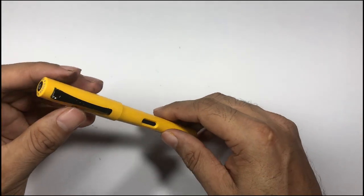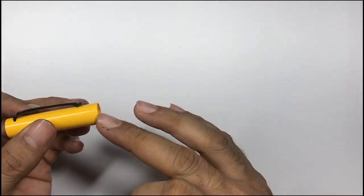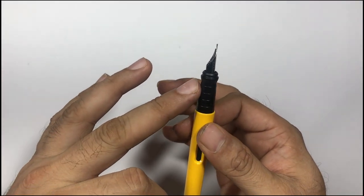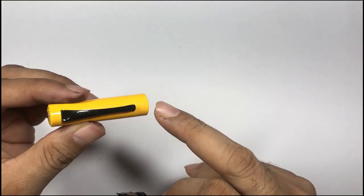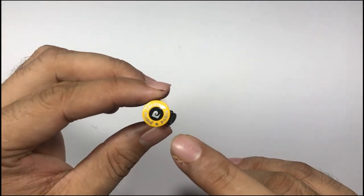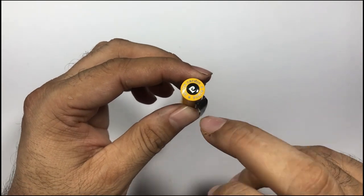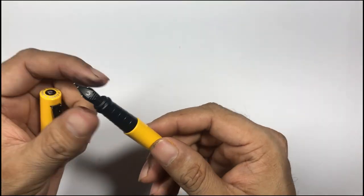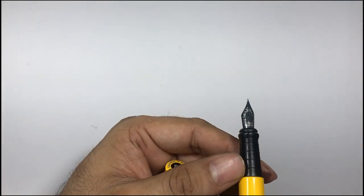As you can see, this is entirely made of plastic—from cap to body to the grip section, everything is plastic. Only the clip is metallic and colored black. You have the finial that says 'P Pierre Cardin' and then 'Pierre Cardin Paris.'